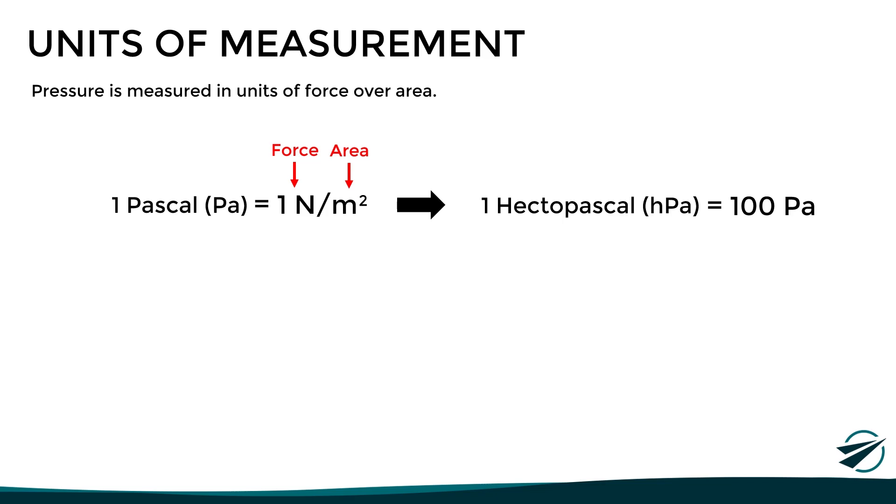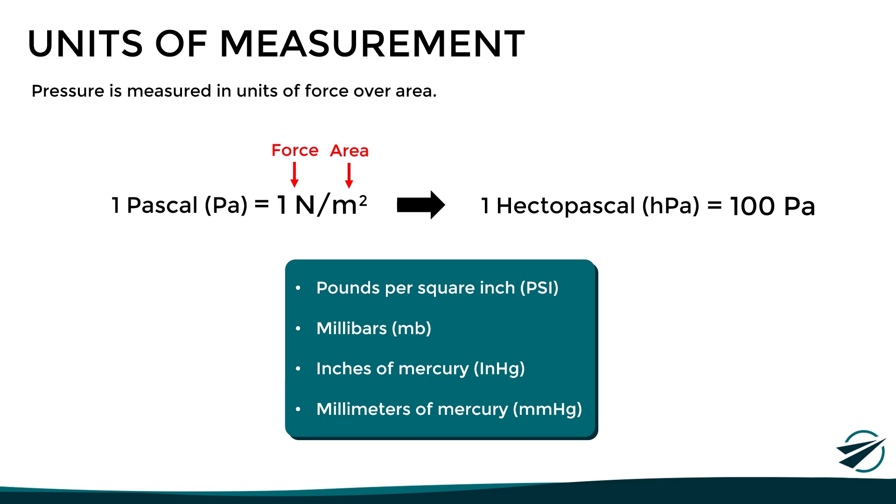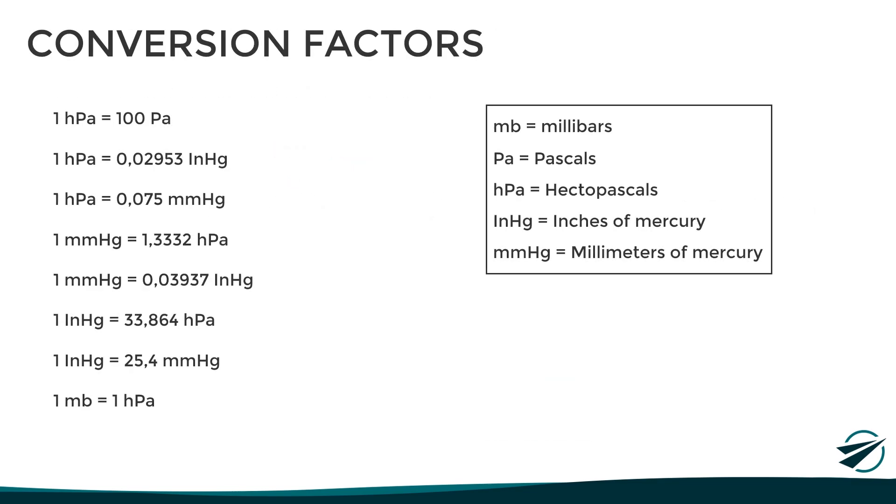However, the hectopascal is not the only unit of measurement used. Other widely used units are pounds per square inch, millibars, inches of mercury, and millimeters of mercury. Here is a list of the most commonly used conversion factors between these units. Now, it is important to mention that in aeronautical meteorology, the most commonly used units are hectopascals and inches of mercury.